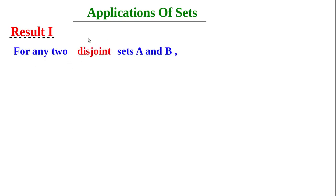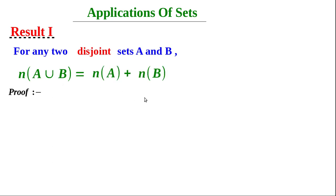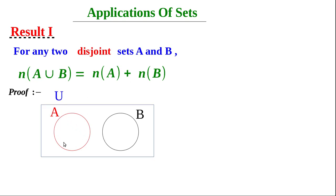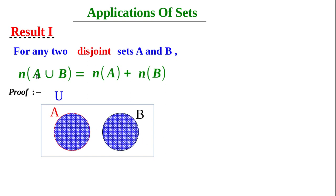Write in your notebook. Write the heading: Application of Sets. There are three results. Result 1: For any two disjoint sets A and B, n(A∪B) = n(A) + n(B). As proof, draw the Venn diagram as we have drawn before. This Venn diagram is self-explanatory and tells us that n(A∪B) = n(A) + n(B).